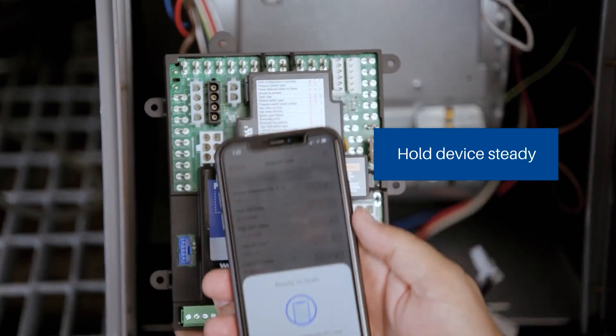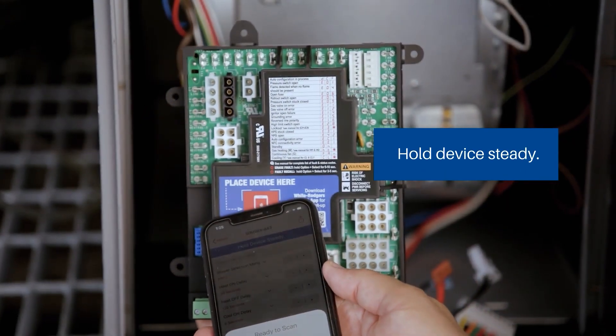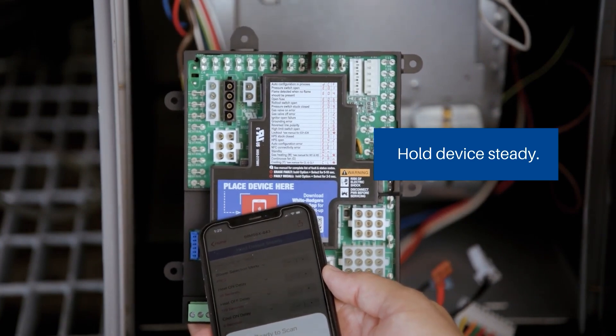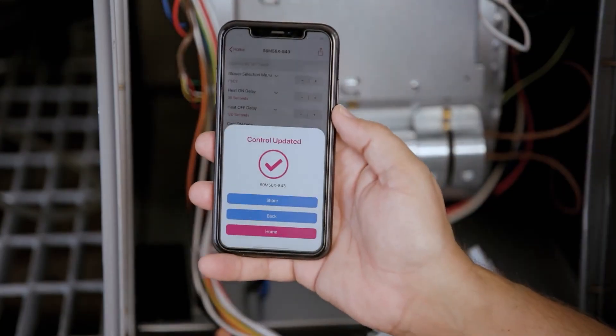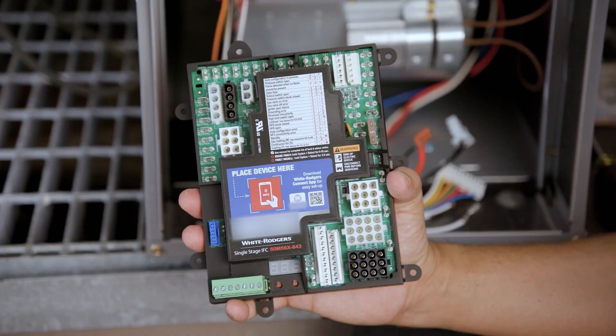Once the settings are configured in the Connect app, they must be uploaded to the control. Select Update Control and touch the device. It might take up to 10 seconds for the update to work. At this point, the control board is ready to be installed.